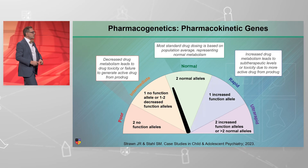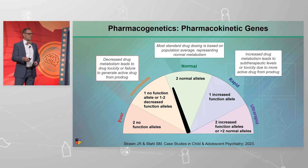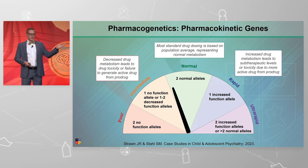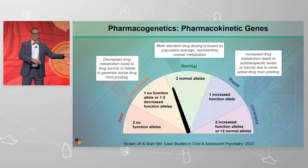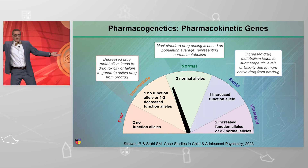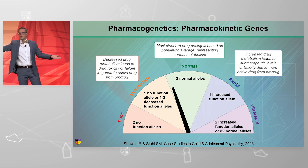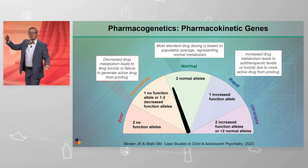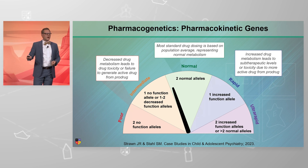Let's look at it another way. This is the pharmacogenetic speedometer. On one end, we have the poor metabolizer — two no-function alleles. On the other end, we have the increased function alleles, two of them typically, but we can also have duplication. And that patient is going to be an ultra-rapid metabolizer.